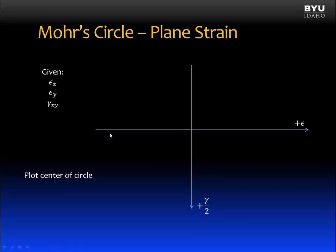The first thing we will do is draw our axes. The horizontal axis is our normal strain axis and the positive direction is to the right. Our vertical axis is then our shear strain axis, and notice that it is positive pointing down. We will plot shear strain divided by two on this axis.